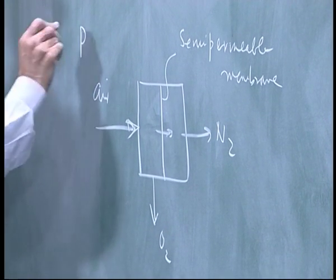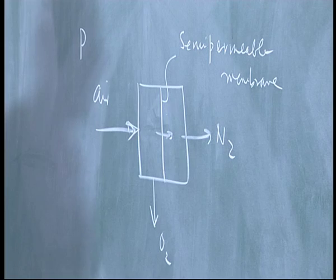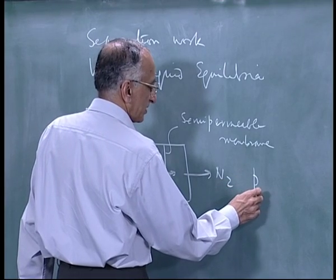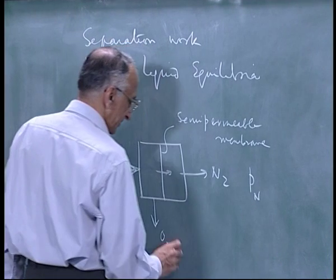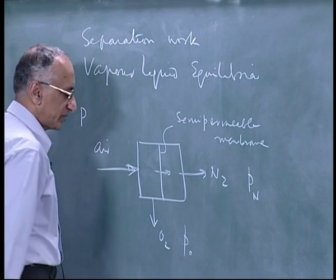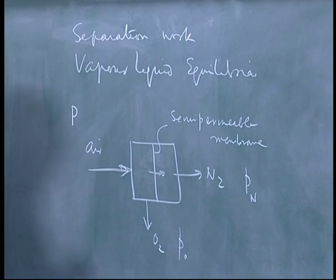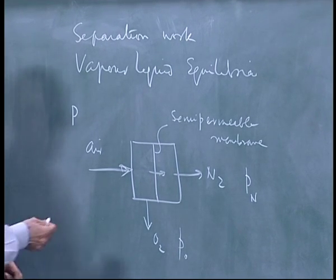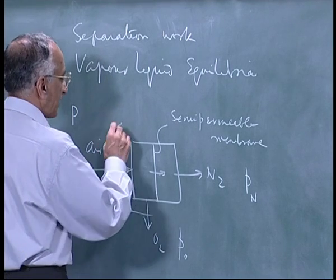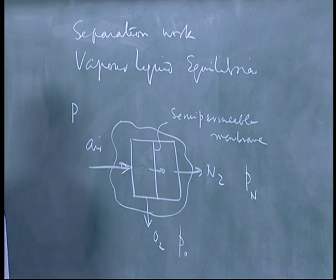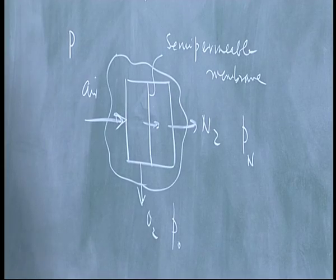Now air is at some pressure P. I want nitrogen at pressure PN. This is at pressure PO. As far as thermodynamics is concerned, even this sketch is very complicated. Draw an envelope like this. All I have is air going in and oxygen and nitrogen coming out.